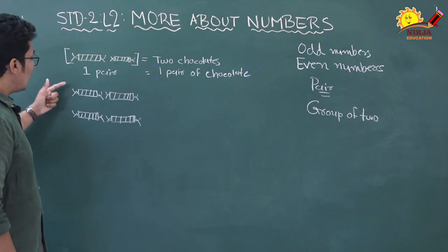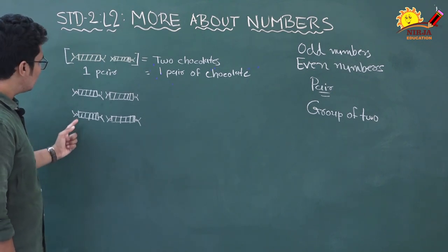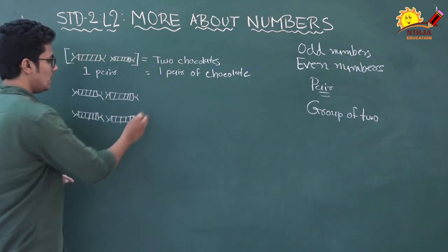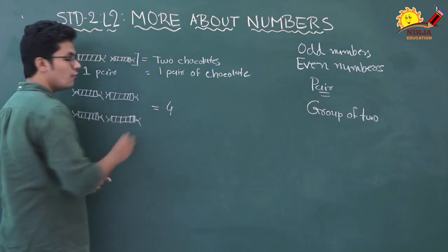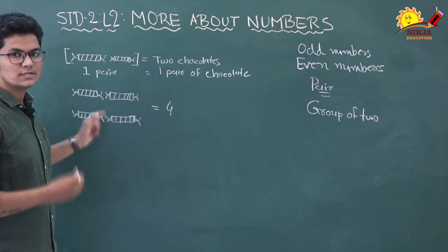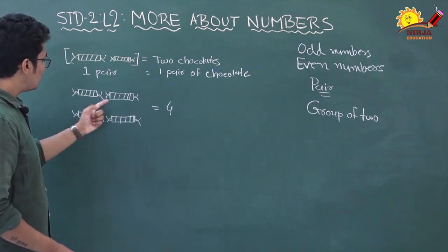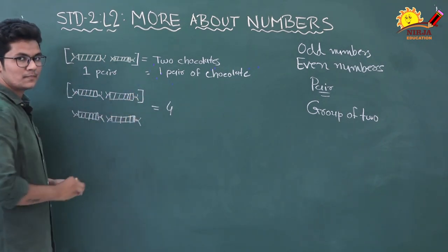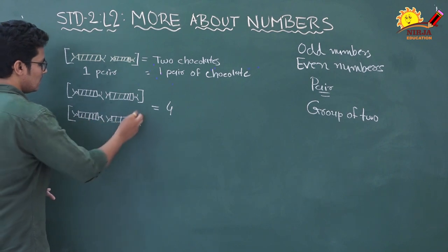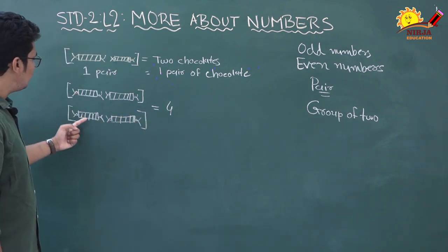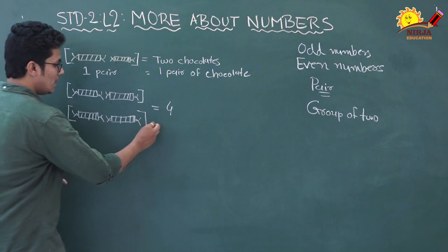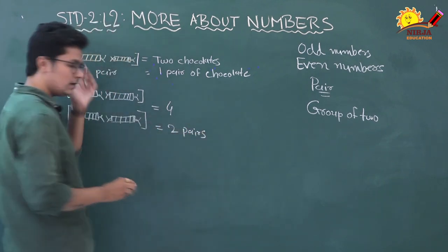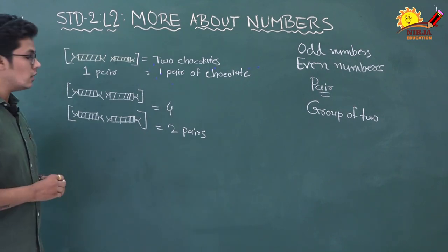Like that, you can see there are four chocolates here — one, two, three, four. How many chocolates? Four chocolates. But how many pairs are there? This is one pair and this is another pair, so one and two — there are two pairs of chocolate.